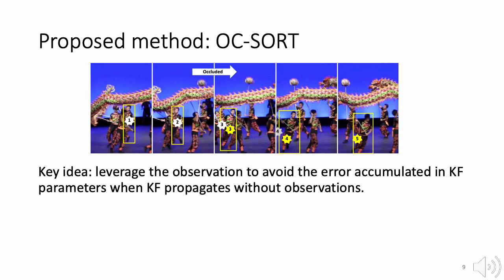We could see that even though SORT also successfully reassociated the target after occlusion, the distorted parameters in its Kalman filter make it lose its track afterwards.